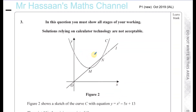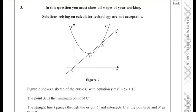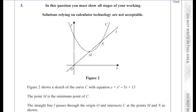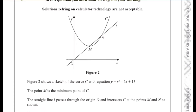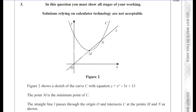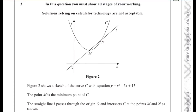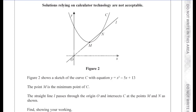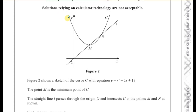Question number three from P1, October 2019, International A-Level. In this question, you must show all stages of your working. Solutions relying on calculator technology are not acceptable. So here we have figure two showing a sketch of the curve C with equation y equals x squared minus 5x plus 13.